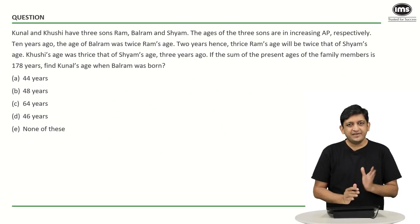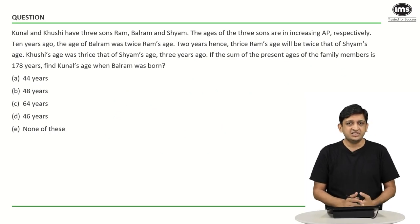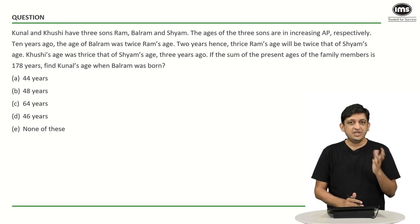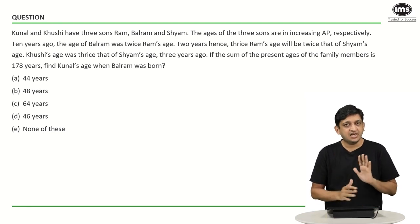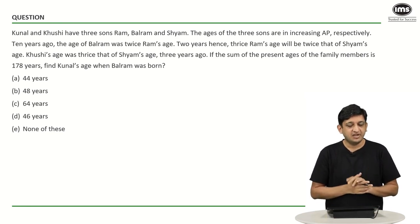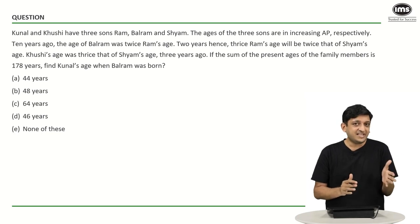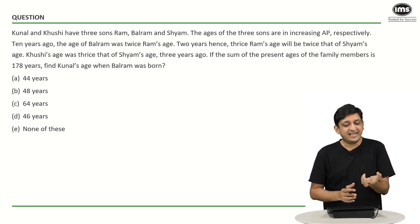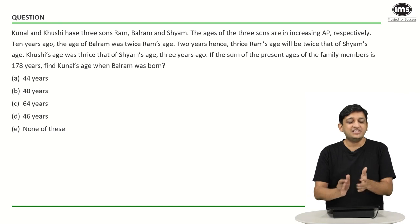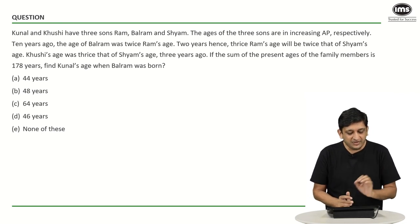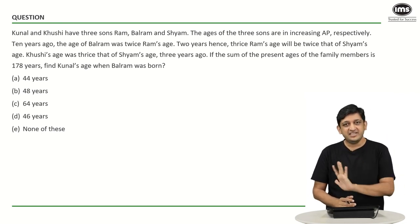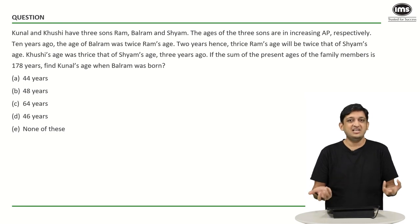This is a slightly difficult question because there is a lot of information given, but in overall context it is not that difficult. You have to save time on other questions so you can use that extra time here. For the second question, we solve it the conventional way as we do not have any special insights. Let us write the names: we have Kunal, Khushi, and the three sons Ram, Balram and Shyam.